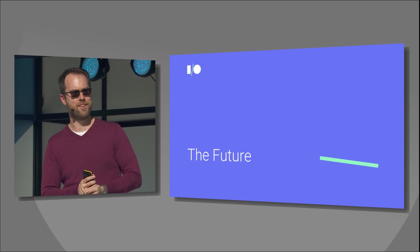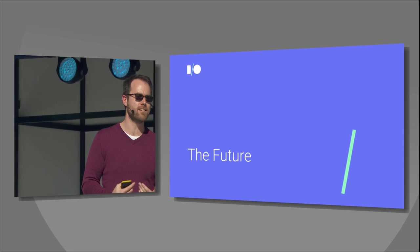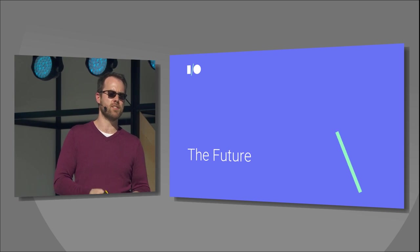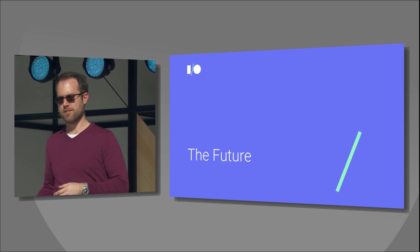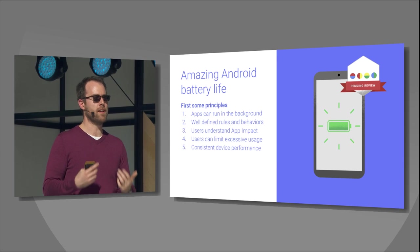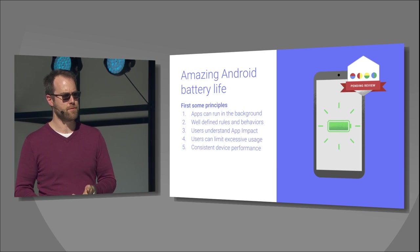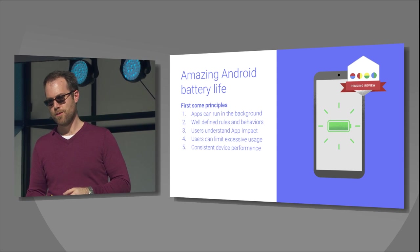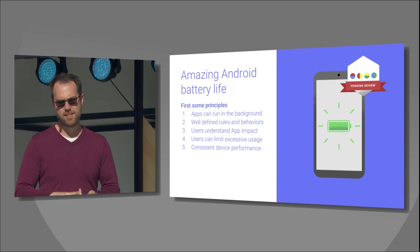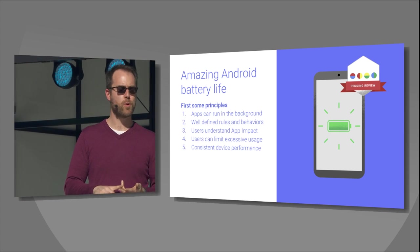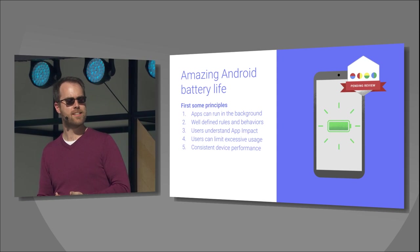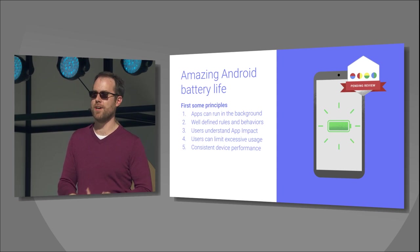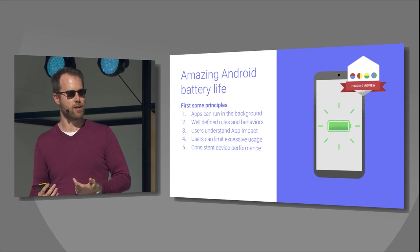Now I'll talk a little about the future. This is also my suggestion to look at background limits, target O, and transition away from background services to jobs, alarms, GCM, etc. We want to get to multi-day battery life. There are a few principles: we fundamentally believe applications should be able to run in the background, but we want much more well-defined rules about when they're able to run. Today you can see OEMs taking independent strategies to solve this problem, and it becomes really difficult for developers to deal with that world when you don't know the rules. We also want users to better understand battery impact and enable users to have options other than just uninstalling an application.